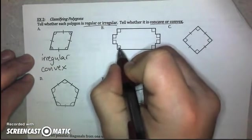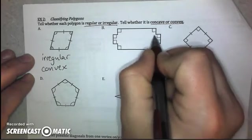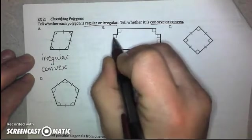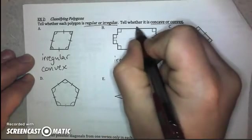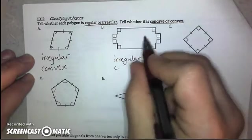Part B, even though these angles are all right angles, because it is concave, it has to be irregular. And also, we do not have any congruent sides marked, so that's also why it's irregular.